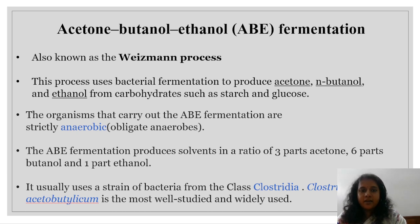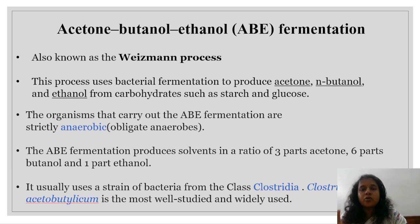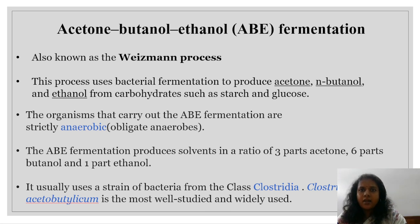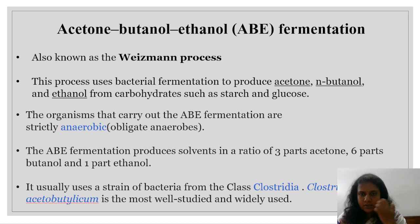The organisms that carry out the ABE fermentation are strictly anaerobic — it means that the bacteria should not consume oxygen and produce other by-products. So we have to get the correct by-products — only then we get the correct products like acetone, butanol, and ethanol. The ABE fermentation produces solvents in the ratio of 3 parts acetone, 6 parts butanol, and 1 part ethanol.